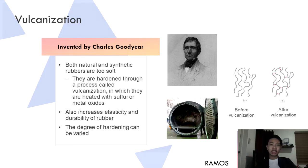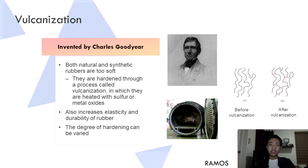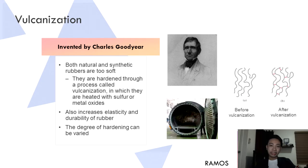The problem with natural and synthetic rubber is that they are too soft, and thus they are hardened through a process called vulcanization or curing. In this process, the rubber is heated with a curing agent such as sulfur or other metal oxides that hardens the rubber. Vulcanization also increases the elasticity and durability of the rubber. The vulcanized rubber has what we call cross-links. This process was invented by Charles Goodyear, and the Goodyear Tire Company was named after him.